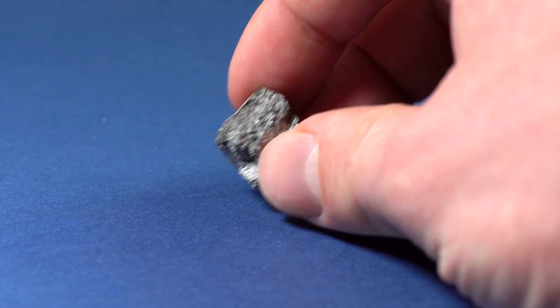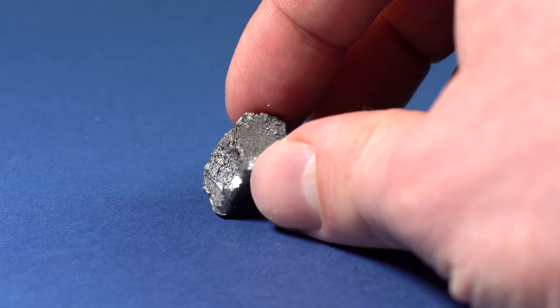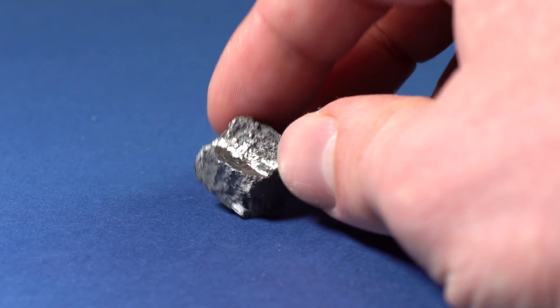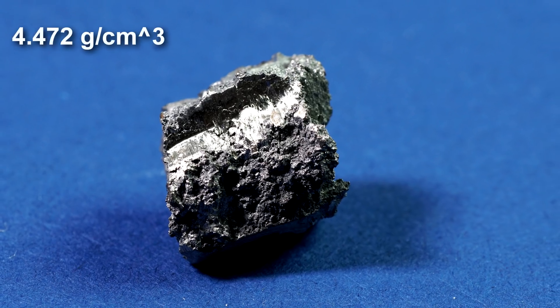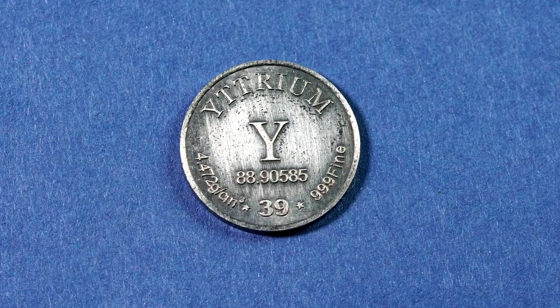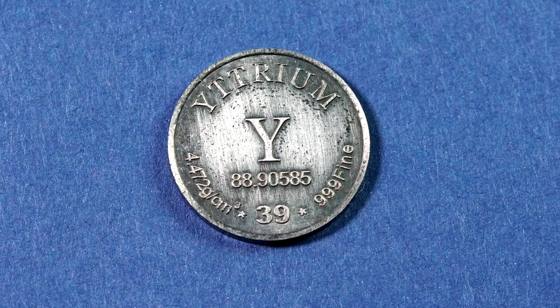Appearance-wise, yttrium is a silvery metallic metal which is highly resistant to oxidation due to its thick oxide layer which covers the metal. Yttrium's density is not very high, that is why it's firm yet flexible enough for making such sovereign coins.